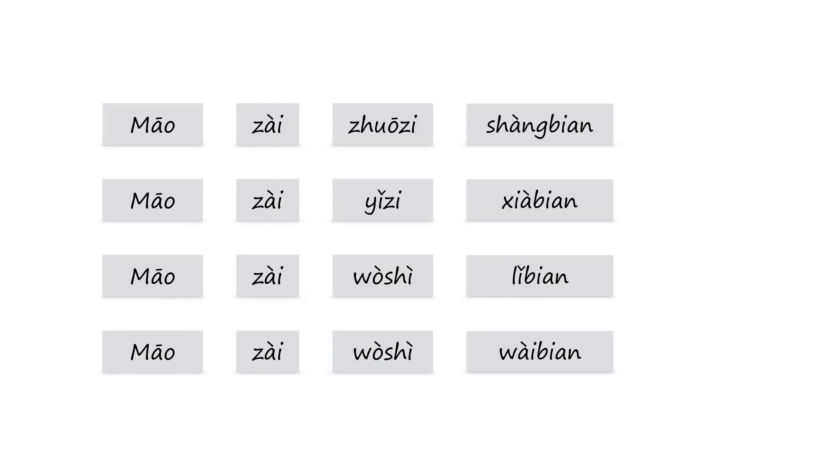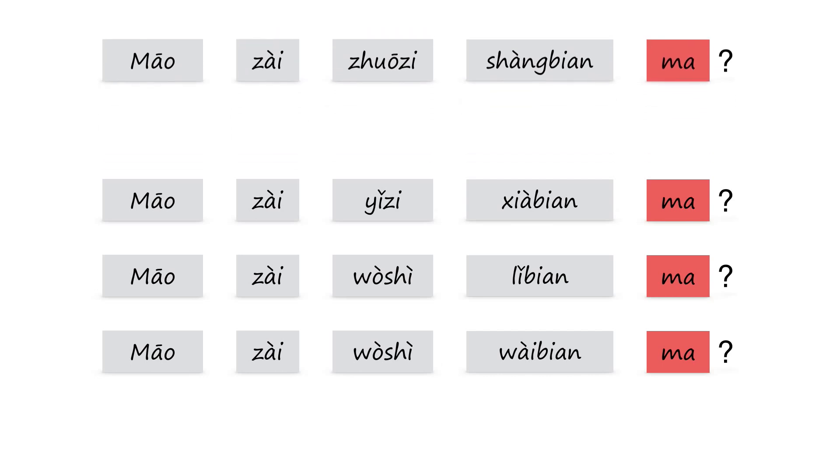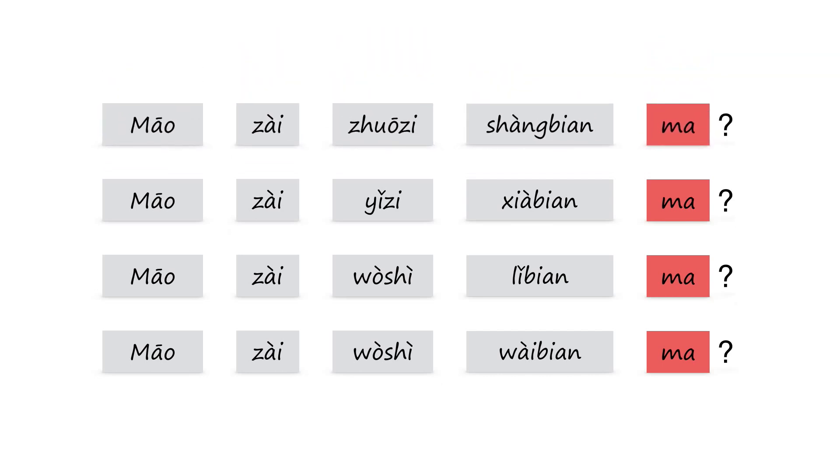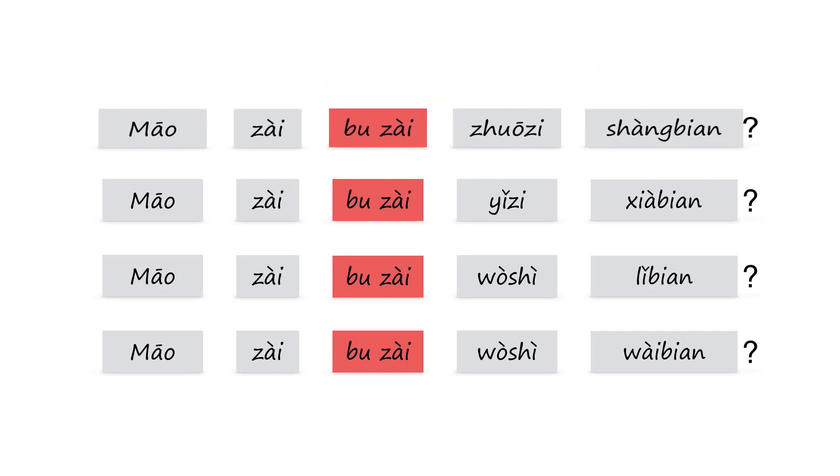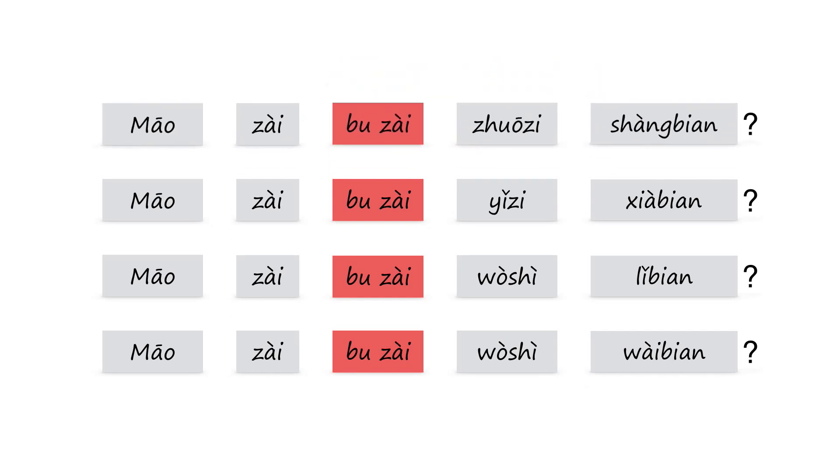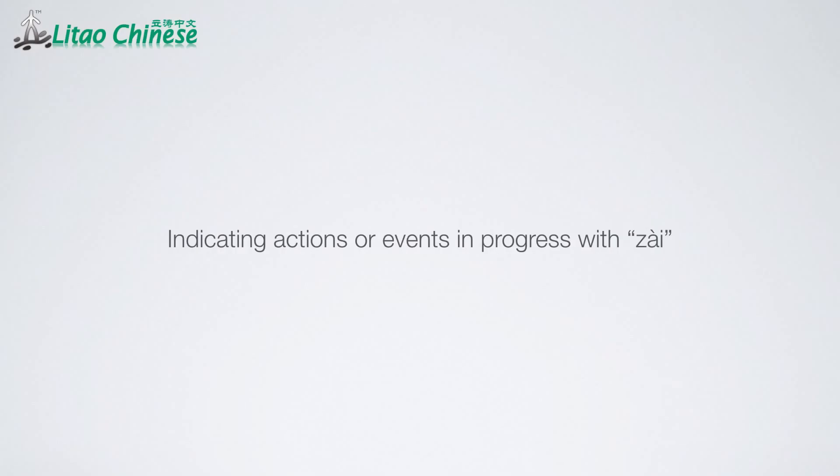And as we know, there are two ways to change these sentences into yes or no questions. One way is to add the word ma at the end, like 猫在桌子上边吗? The other way is to put 不在 after zai, like 猫在不在桌子上边.